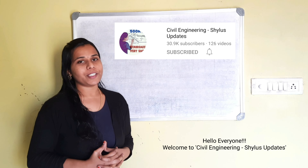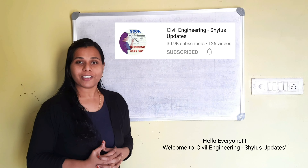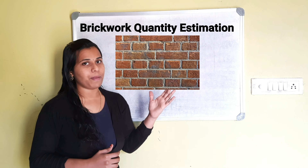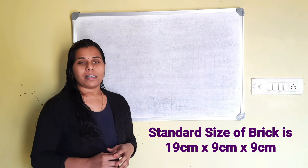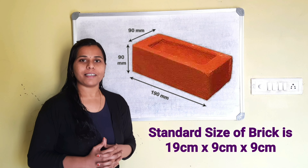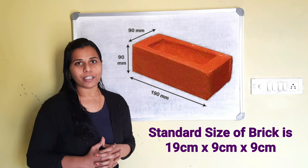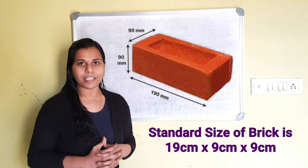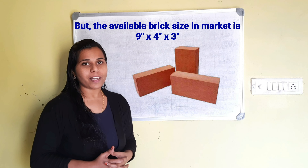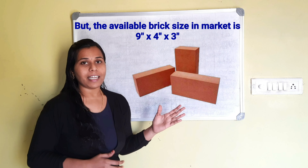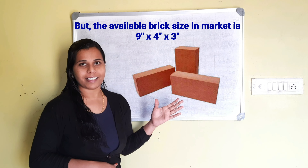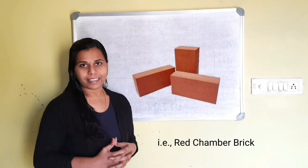Hello everyone, welcome to Civil Engineering Shilu's Updates. Brickwork Quantity Estimation: The standard size of brick is 19 cm x 9 cm x 9 cm, but the available brick size in the market is 9 inches x 4 inches x 3 inches — that is the red chamber brick.